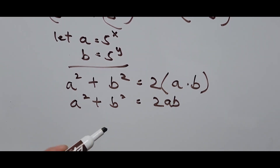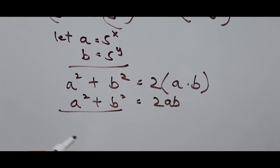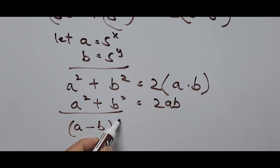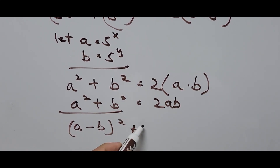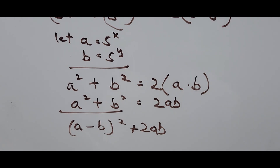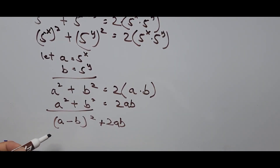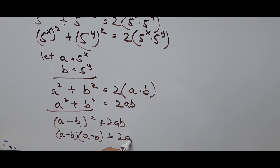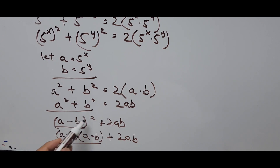The left side of the equation is a special factor in algebra. We can rewrite a squared plus b squared as equal to (a minus b) squared plus 2ab. Expanding this factor further gives us (a minus b) times (a minus b), plus 2ab.